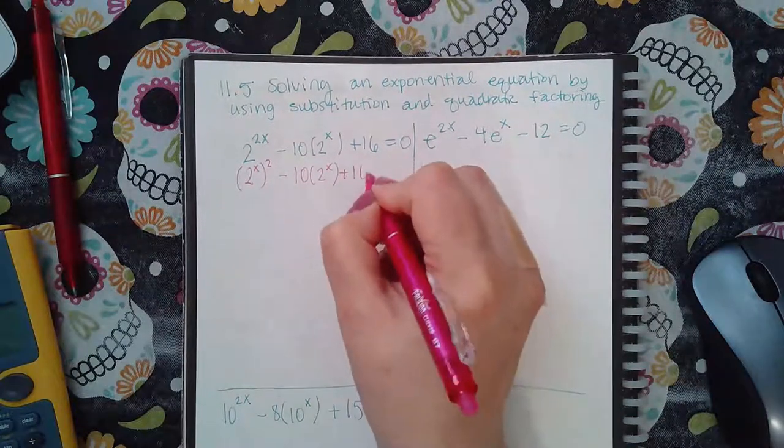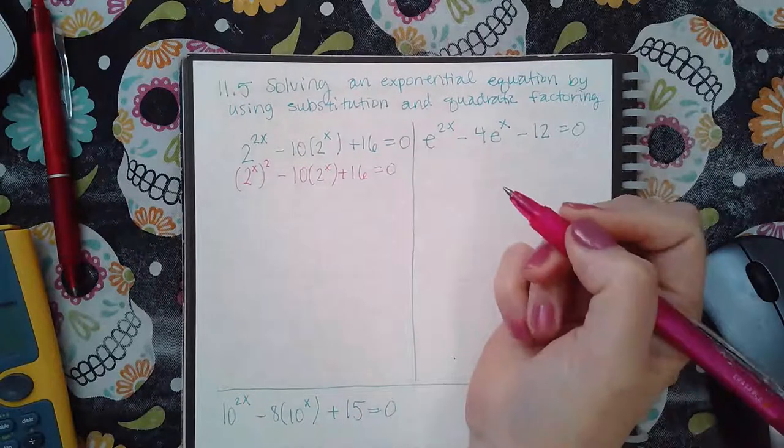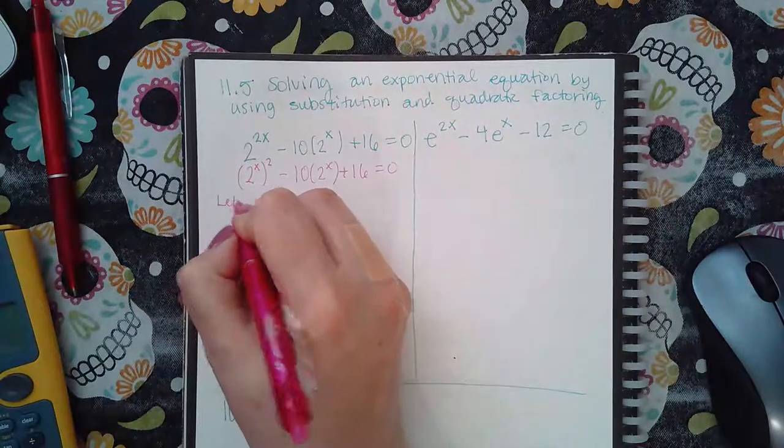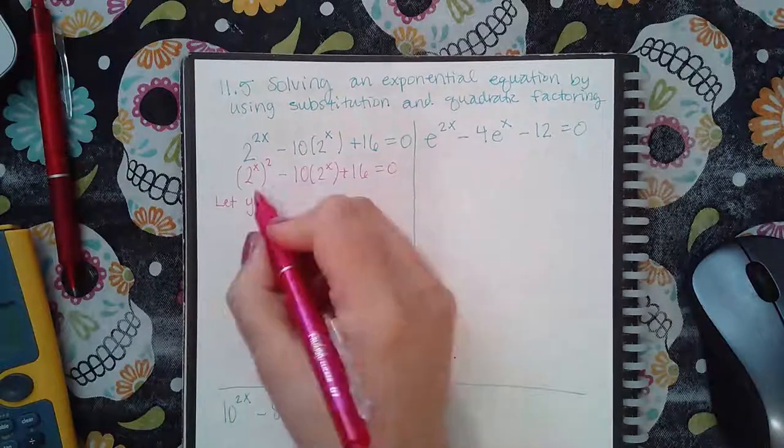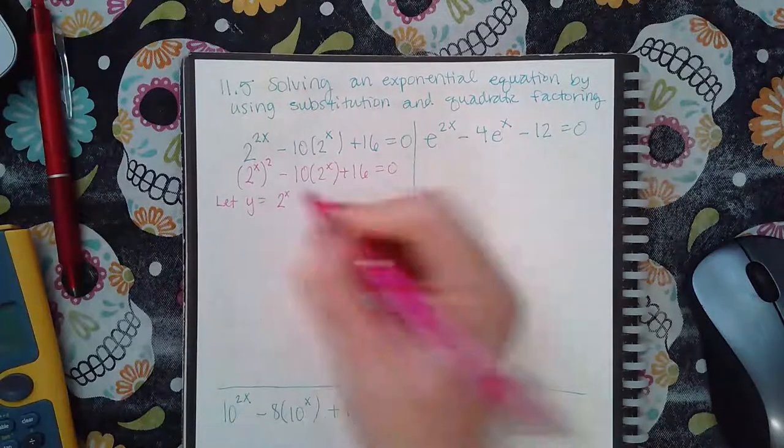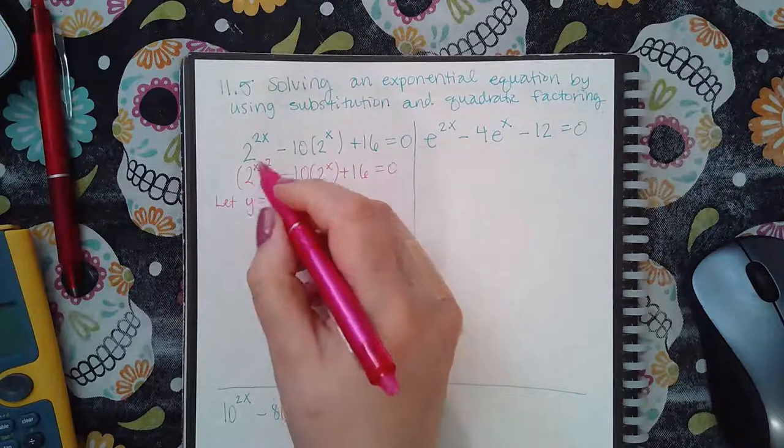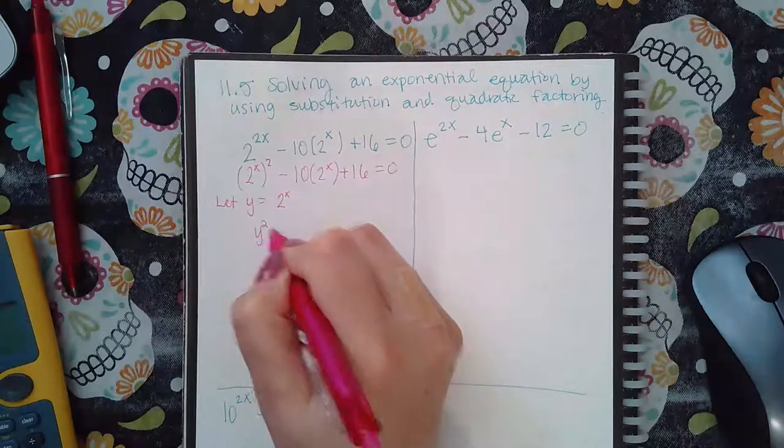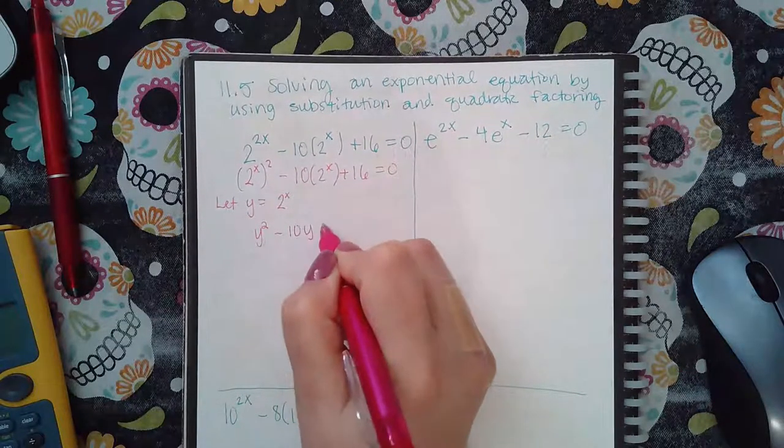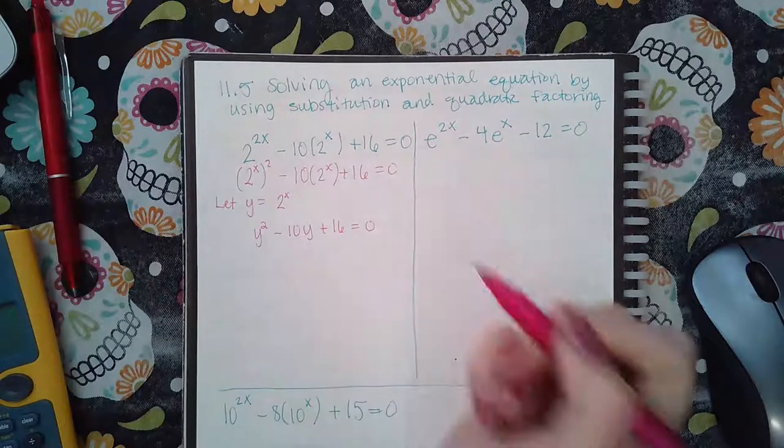And then what you want to do is you want to use substitution. So instead of x, we'll say let y equal what's inside that parentheses there, which is 2 to the x. And then that means this becomes y squared, this becomes minus 10 times y, and then you have plus 16 equal to 0.